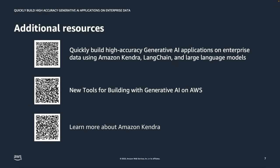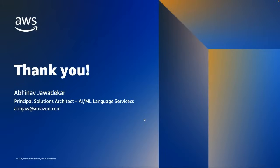These are additional resources you can refer to: a blog post on how to quickly build high accuracy generative AI applications on enterprise data, a blog post about all the new tools and building blocks offered for generative AI applications on AWS, and you can also learn more about Amazon Kendra. Thank you, hope this was useful.